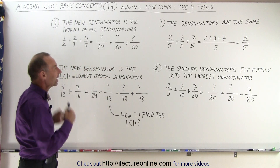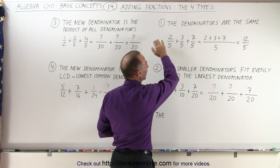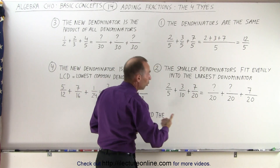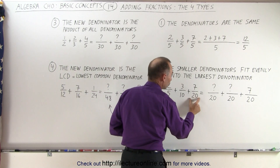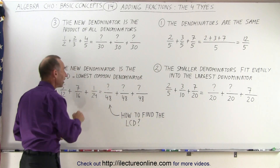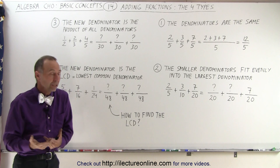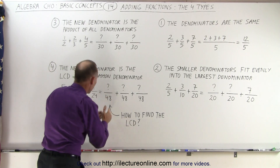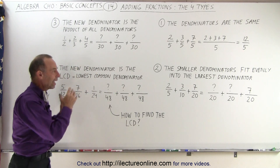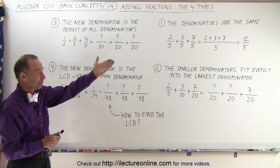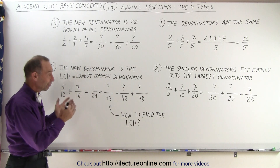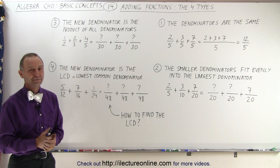So those are the four different kinds of cases. The first case is really easy — you simply add the numerators. For the other three cases, you determine the new denominator: in the second case it's the largest of all the denominators; in the third case it's the product of all the denominators; and in the fourth case it's the lowest common denominator — the smallest number where all other denominators fit evenly into. We'll show you how to do those three different types in upcoming videos. Stay tuned, and thank you.